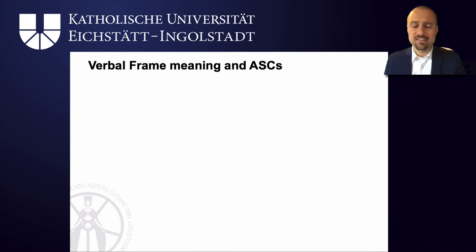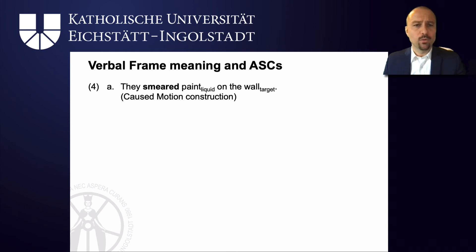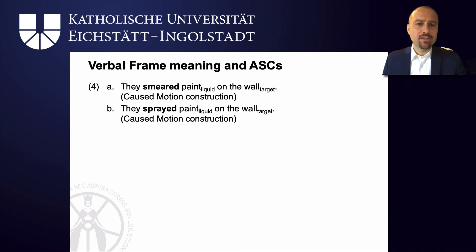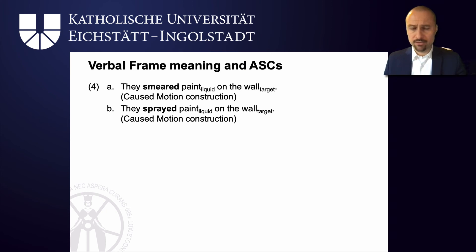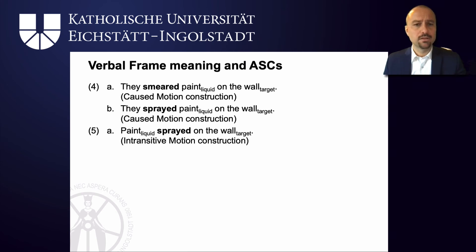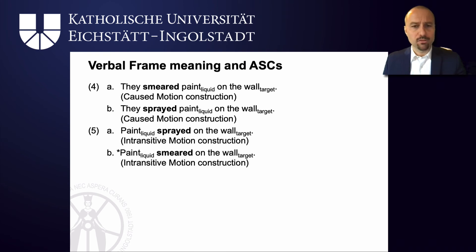As it turns out, not just the type of participants plays a role when it comes to the merging of verbal events and argument structure constructions. Take 'they smeared paint on the wall' — a caused motion construction because paint is moved onto the wall — and 'they sprayed paint on the wall', again a caused motion construction but combined with 'spray'. In both cases you've got a liquid, paint, that ends up on a target, the wall. So with respect to the semantic frames, you could argue that 'smear' and 'spray' are similar. But if you try to merge them with the intransitive motion construction, 'paint sprayed on the wall' is perfectly acceptable, whereas 'paint smeared on the wall' doesn't seem to work.